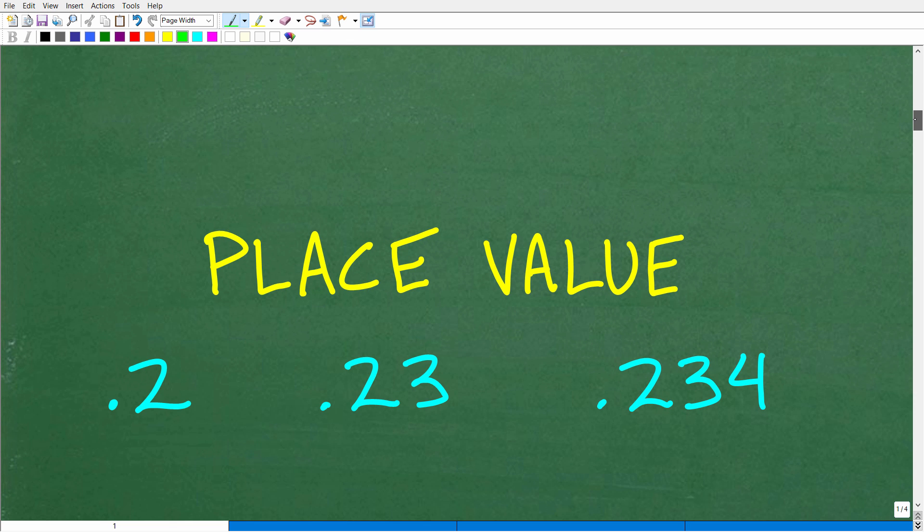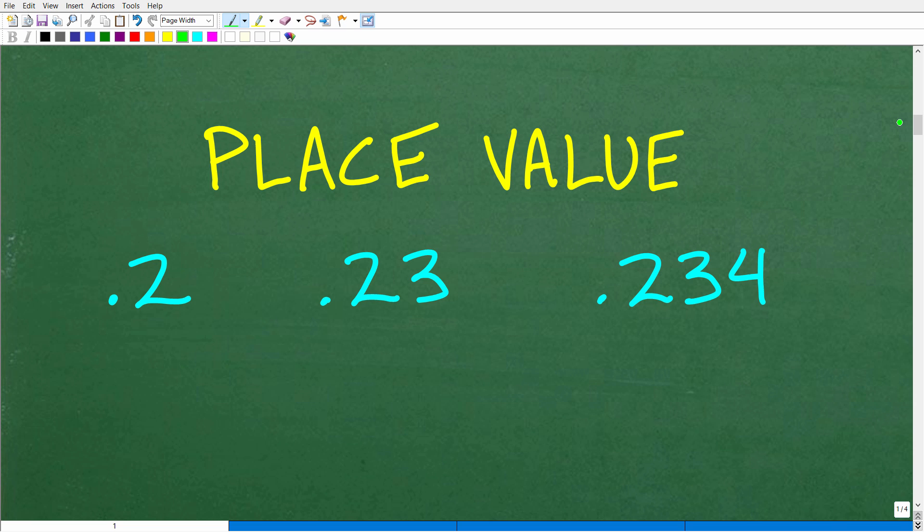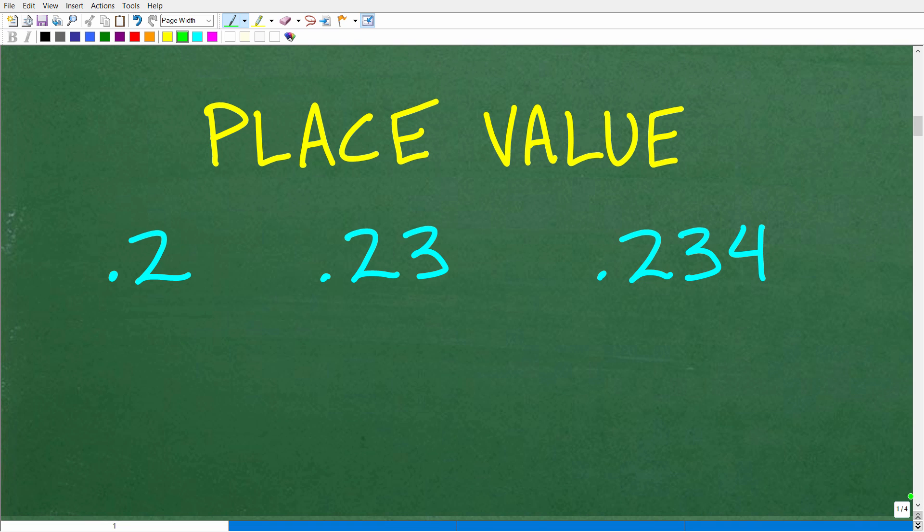Now, the way these numbers, these values are written out can be confusing, especially if you don't remember place value. So let's go ahead and review place value real quick. Place value is basically how we write or kind of speak out a decimal value. Here is... well, actually, let me give you a little pop quiz here. How can I describe this number? So just say that number out loud. Most of you are going to say maybe like, oh, that's point two.